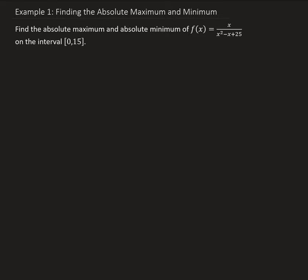The first step is to find our critical numbers. We have a continuous function on a closed interval from 0 to 15, so the maximum and minimum values will either occur at the boundary points or at the critical numbers. To find the critical numbers, we need to set the derivative of the function equal to 0. So let's go ahead and do that.